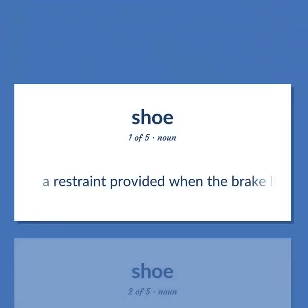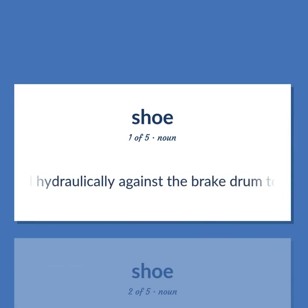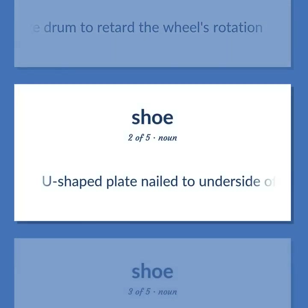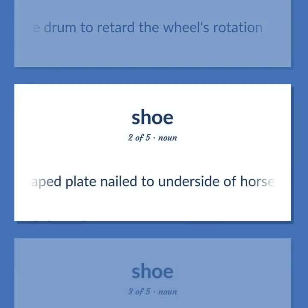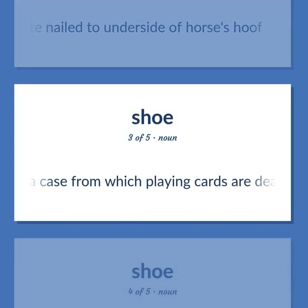Shoe (brake definition): A restraint provided when the brake linings are moved hydraulically against the brake drum to retard the wheel's rotation. Shoe (card games): A case from which playing cards are dealt one at a time.